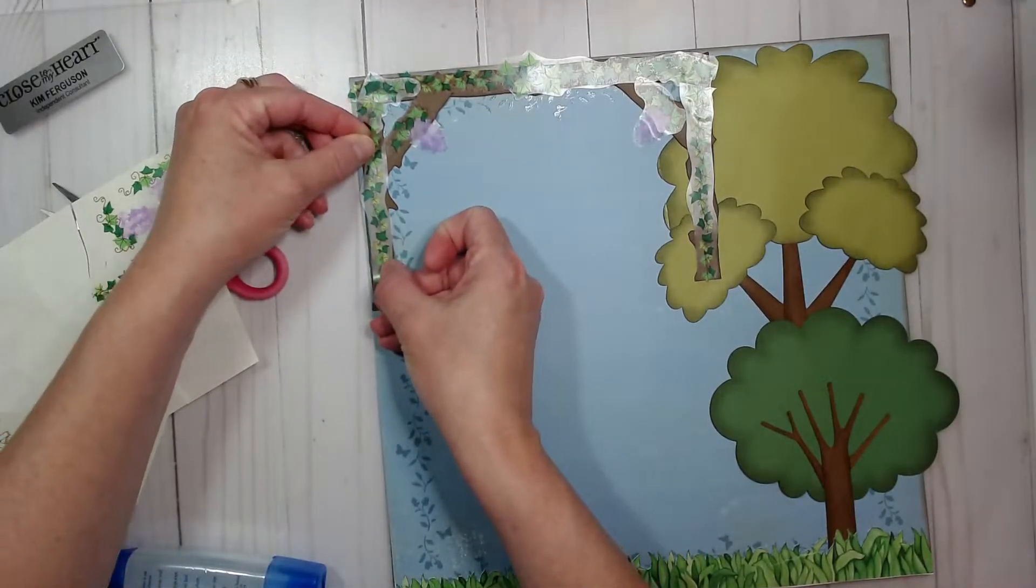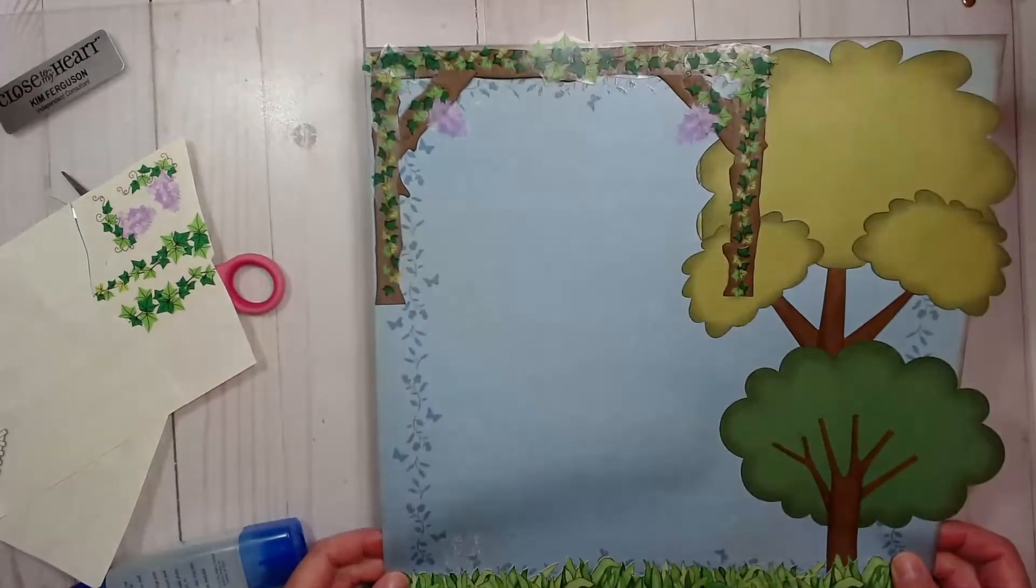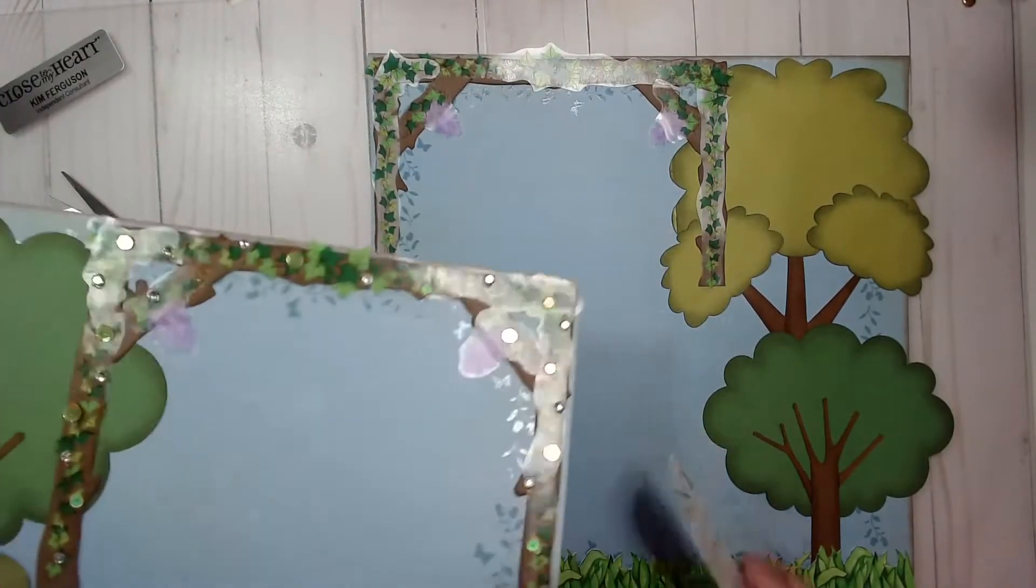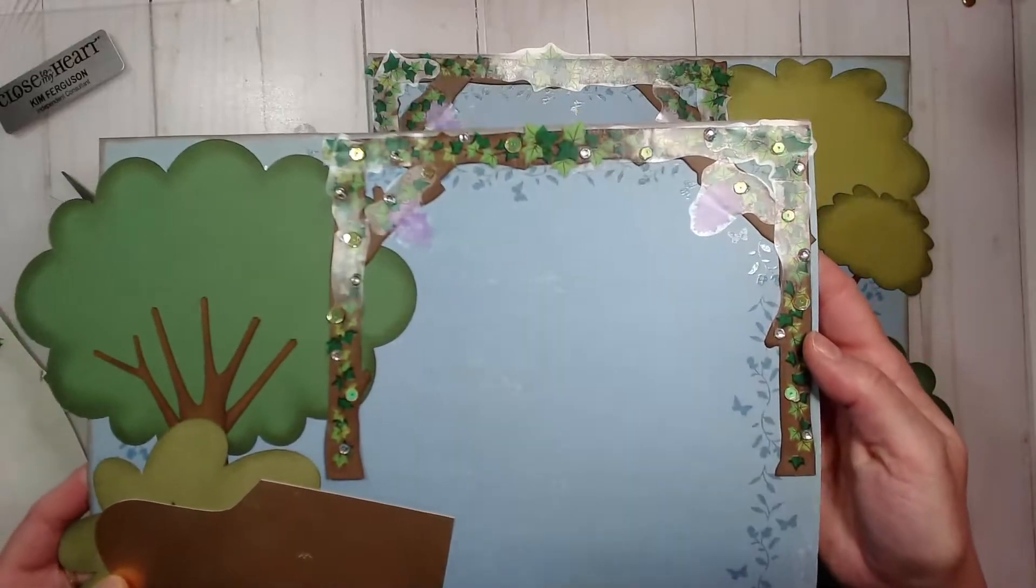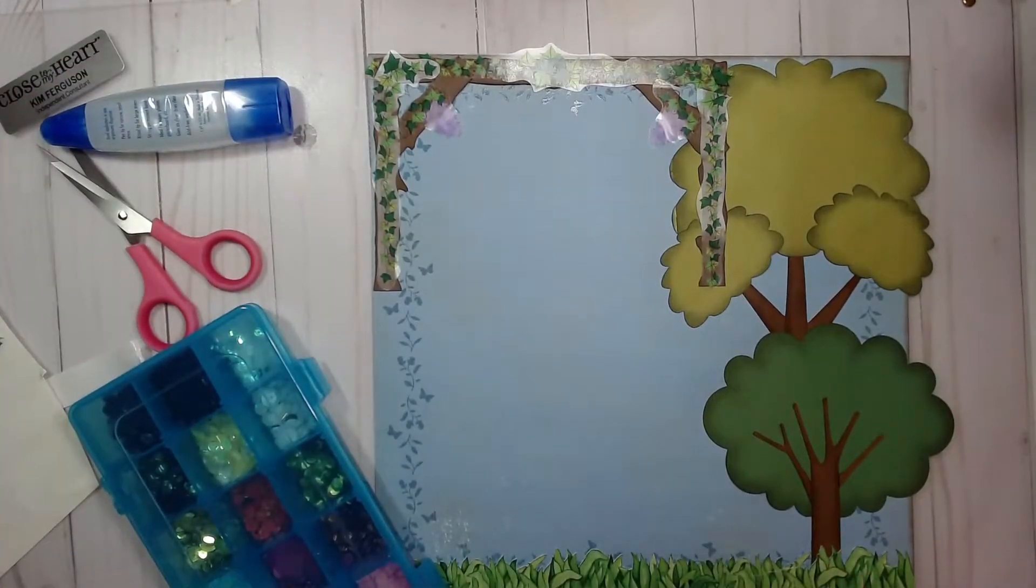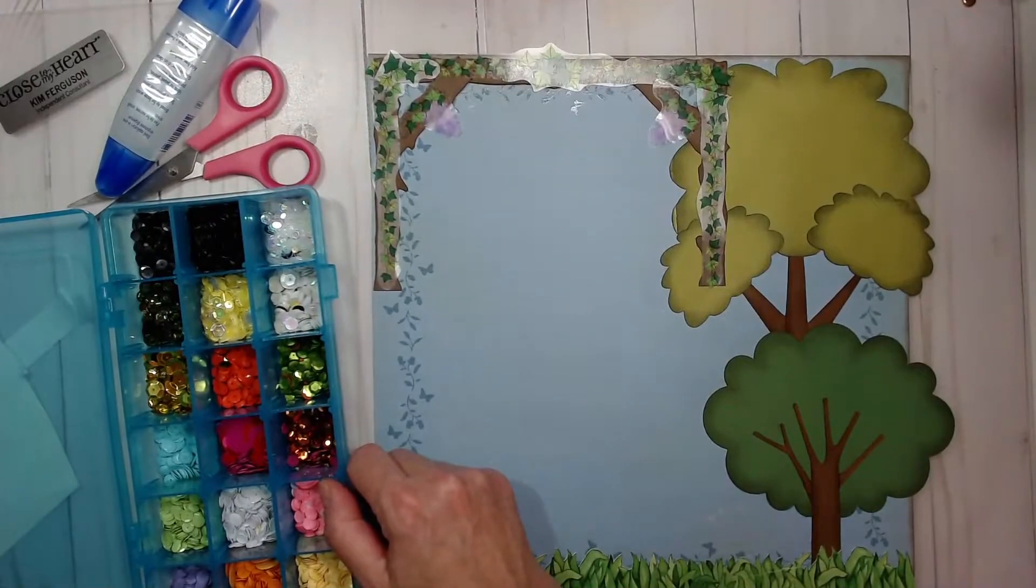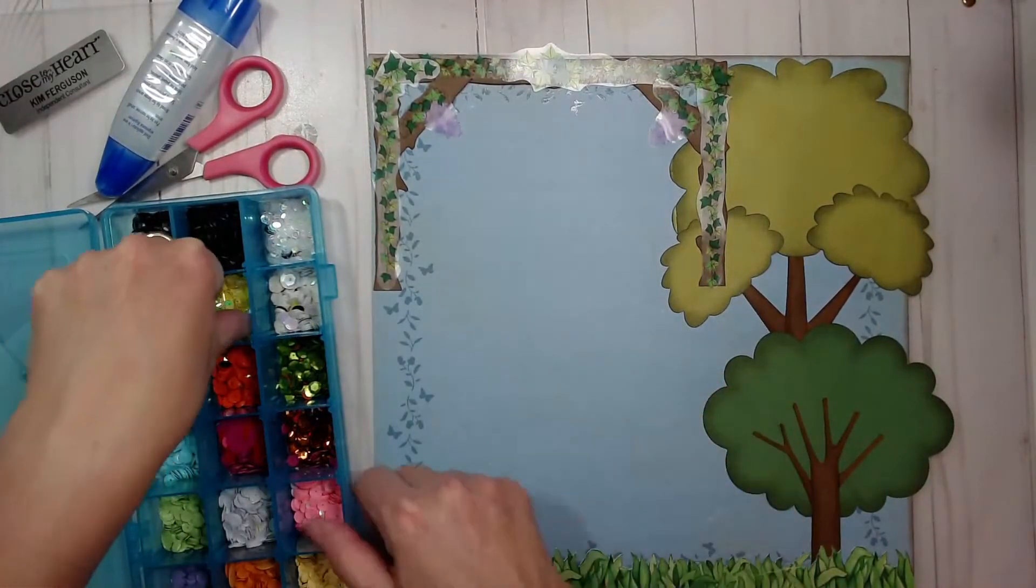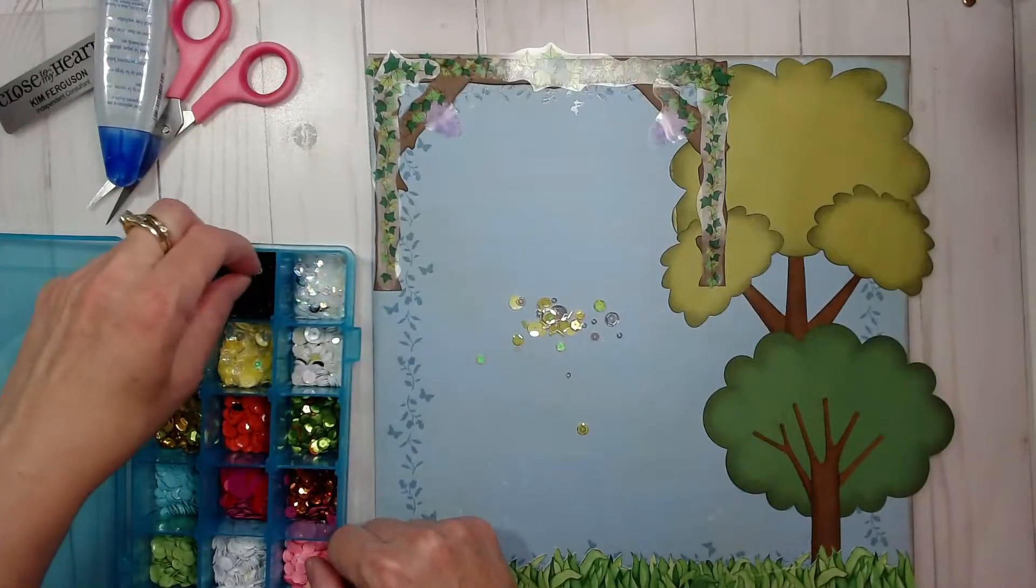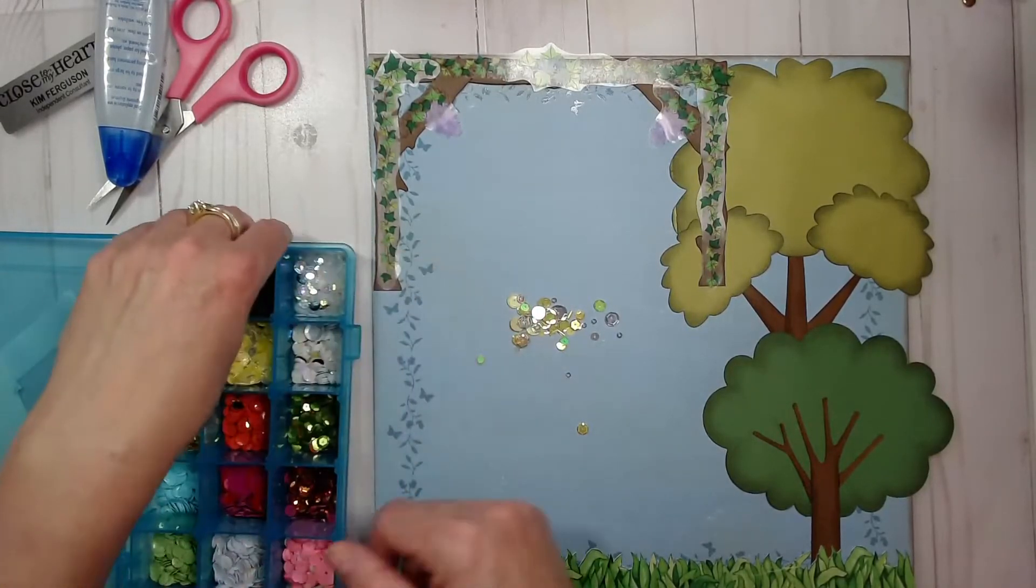My last step was to add those sequins and gems. I'm just going to use some glue dots. I was trying to replicate those outside lights that are so popular now, those white lights hanging throughout people's yards, just trying to give it that effect. Their colors were gray and yellow, so I was using the yellow sequins first, putting those throughout the arbor and the ivy, and then I'll go back with those clear gems.